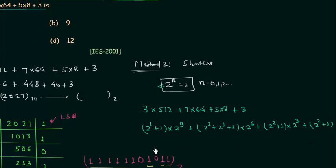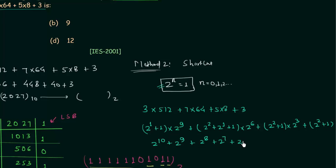We further simplify by opening the brackets: we get 2 raised to power 10, plus 2 raised to power 9, plus 2 raised to power 8, plus 2 raised to power 7, plus 2 raised to power 6, plus 2 raised to power 5, plus 2 raised to power 3, plus 2 raised to power 2, plus 1.